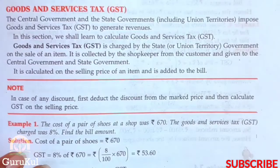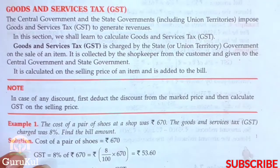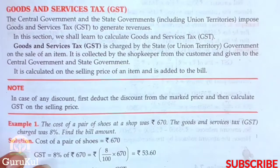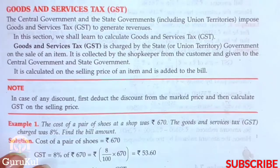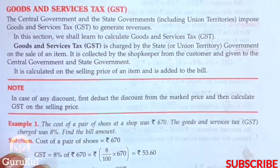GST is calculated on the selling price of an item and then added to the bill. This is the key difference — previously when we solved sums to find profit and loss, we calculated on the cost price. But here, GST is applied on the selling price. Always keep this in mind.